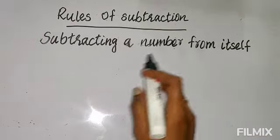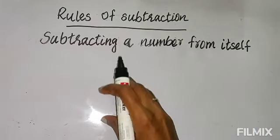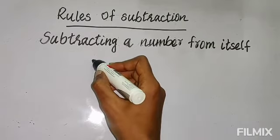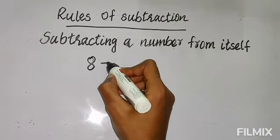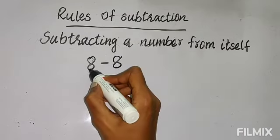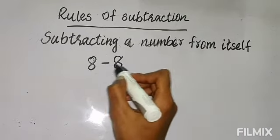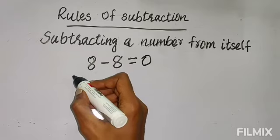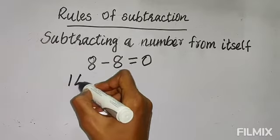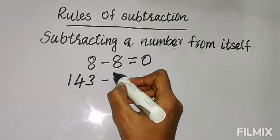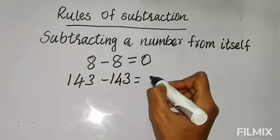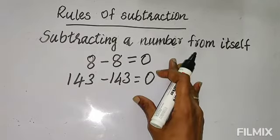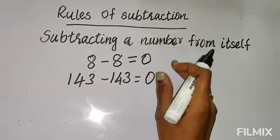Now let's see the next rule: subtracting a number from itself. We take one number and subtract that same number from it. Take 8 — from 8 we minus 8. The number from itself: 8 minus 8 is 0. It can be any bigger number — if you minus a number from itself, the answer will always be 0.